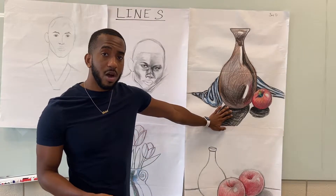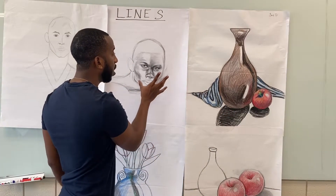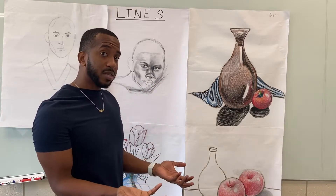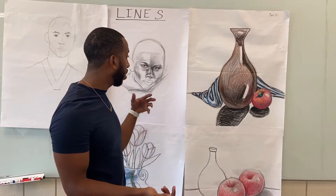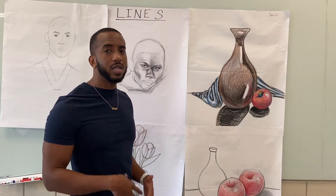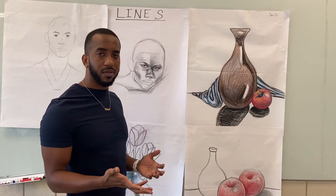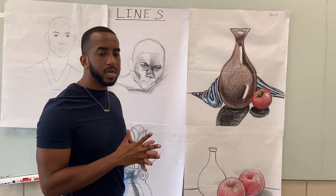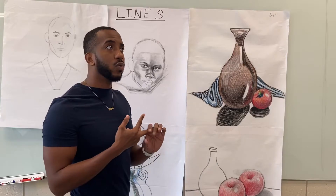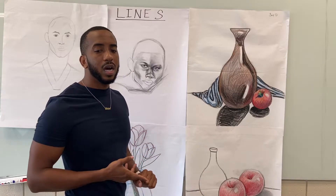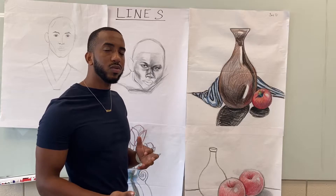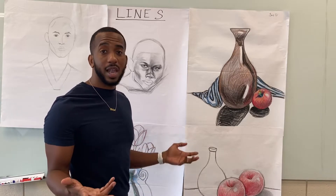A crayon is going to make a different mark than a colored pencil. A graphite pencil is going to make a different mark than a pen. A pen is going to make a different mark than a crayon — they're all going to be different. And you can look at the smoothness, the thickness of a line, the roughness of a line, and you can kind of determine what someone used to make that line.